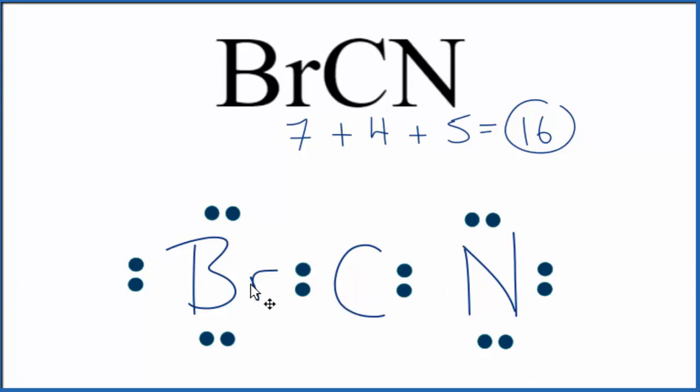We can share the electron pairs from either the bromine or the nitrogen. Typically, halogens only form single bonds most of the time. So I'm going to move electrons from the nitrogen in here to the center like this. Now carbon has six and the nitrogen still has eight.